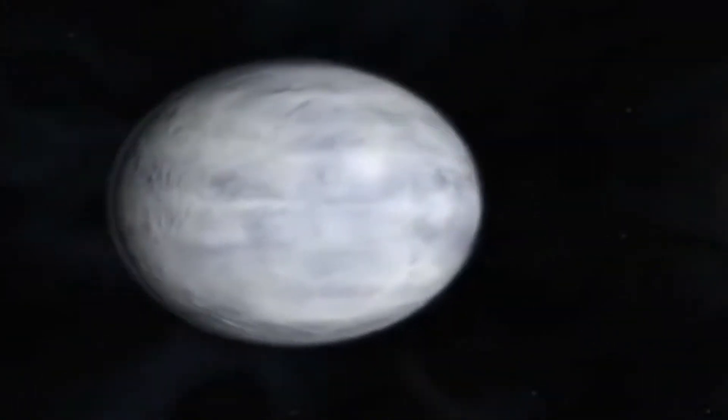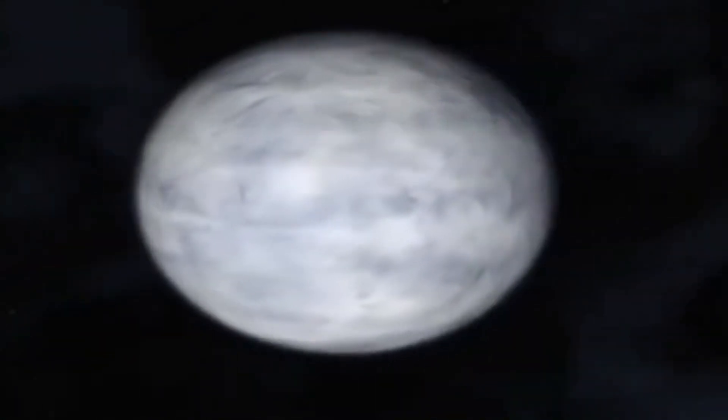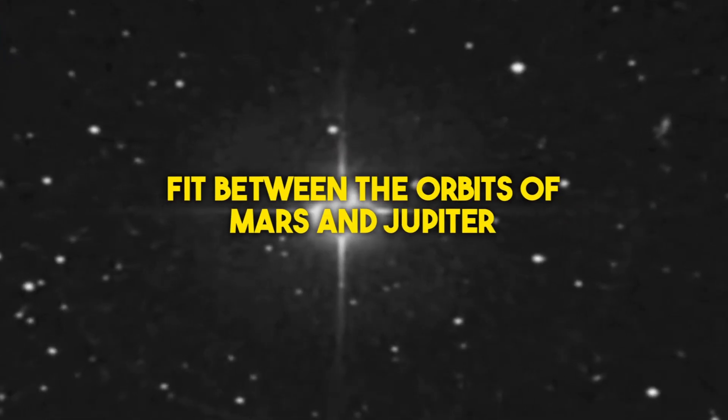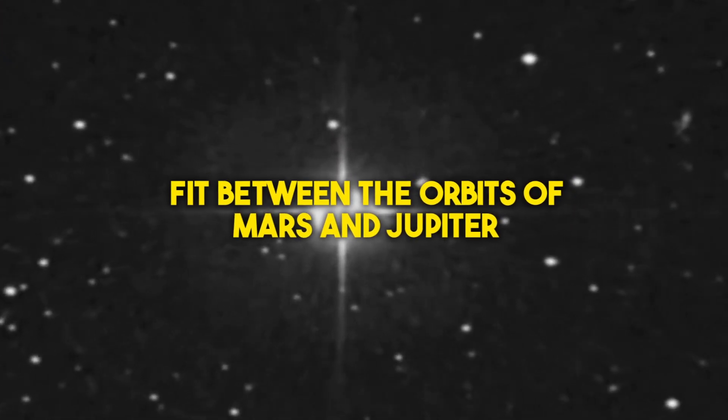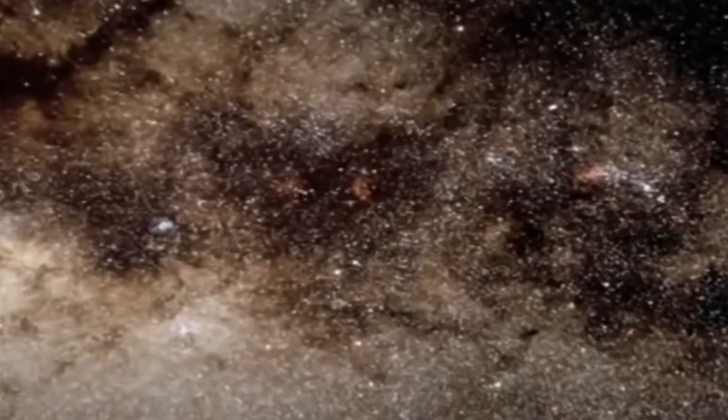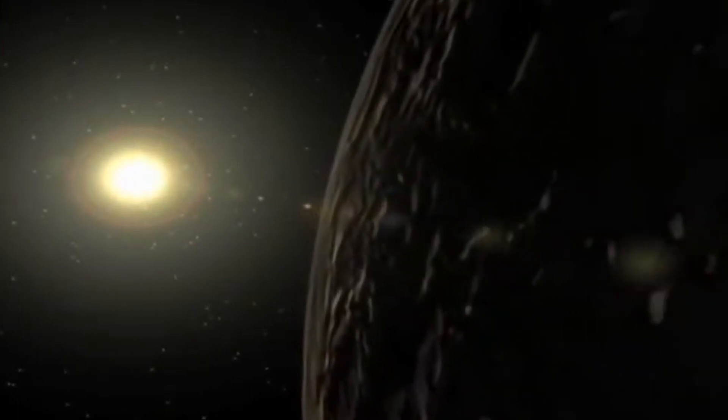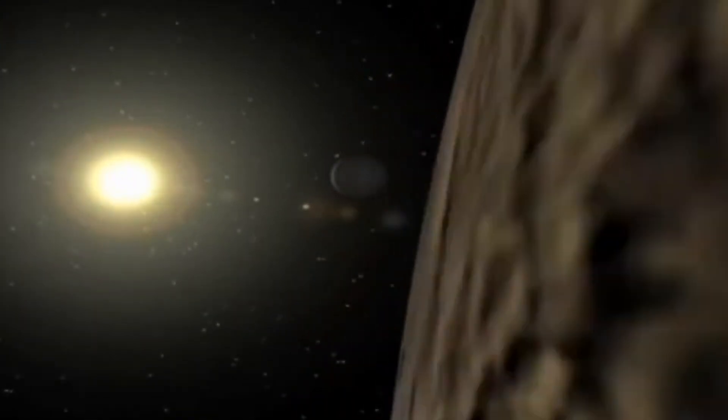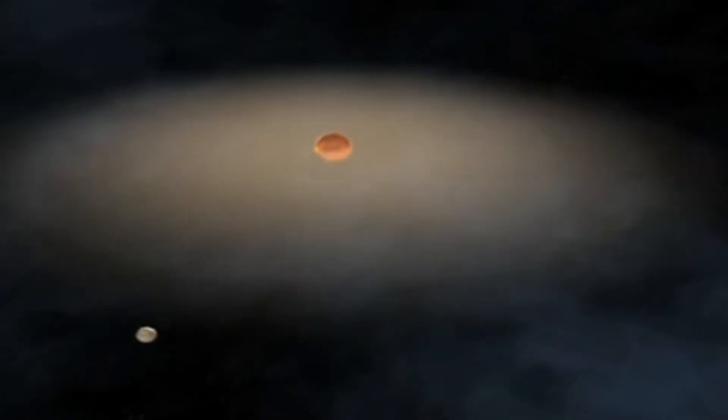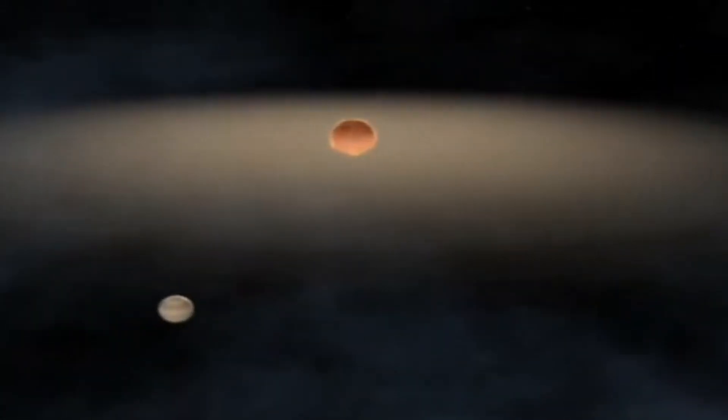Now picture this chilly planet nestled in the cosmic dance, orbiting its host star at a distance that would snugly fit between the orbits of Mars and Jupiter in our own solar system. But here's the twist. Its host star isn't your average blazing behemoth. No, it's a low-mass, cool star known as a red dwarf, casting a gentle, icy glow over its frosty companion.